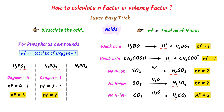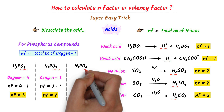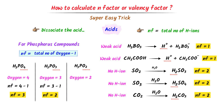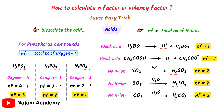In case of H3PO2, the total number of oxygen is 2, so n-factor = 2 − 1 = 1. The n-factor of H3PO2 is 1. Just remember that using this simple method we can easily find the n-factor of any phosphorous acid.